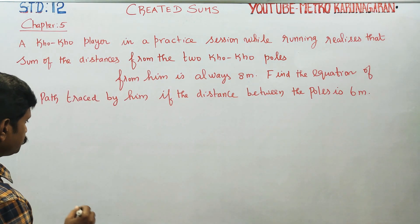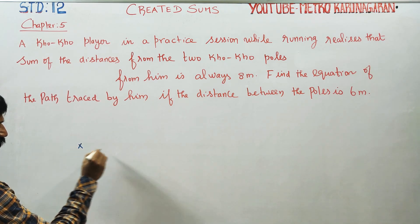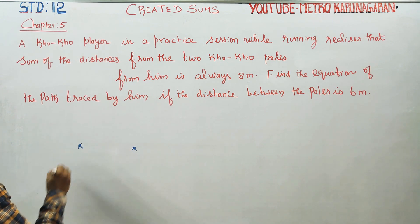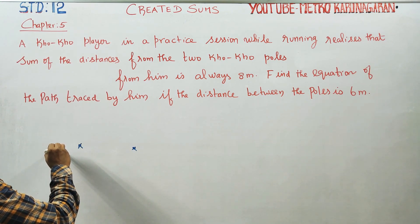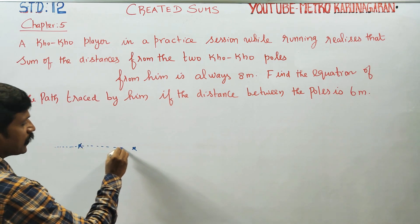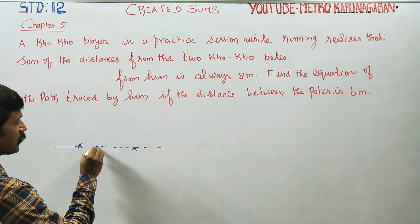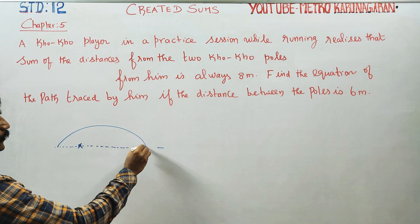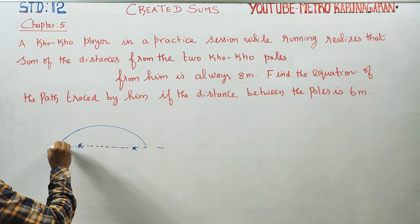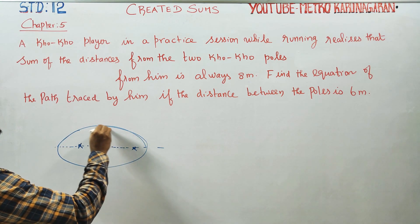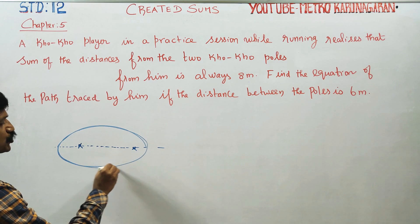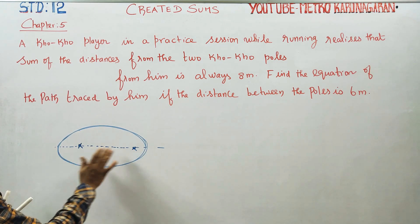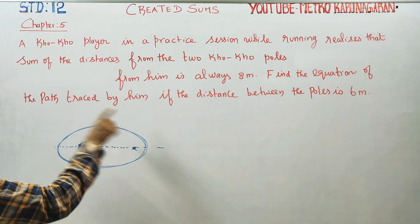If you look at the two cocoa poles, the coco game is different. If you look at the ground, players move in an elliptical shape. This is pole 1 and pole 2. This is focus 1 and focus 2 — the two poles are the two foci of the ellipse.